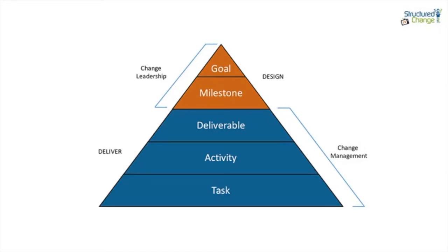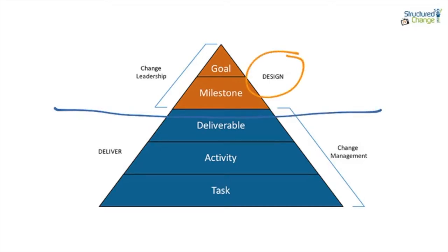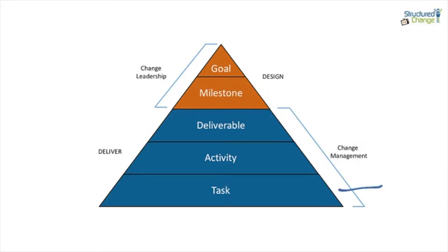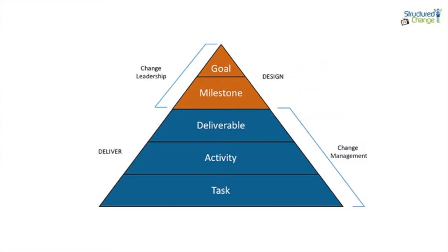A parallel delivery triangle is another part of the Structured Change framework. You'll see the design piece corresponds to leadership, and the execution or delivery piece corresponds to change management. The idea is that whether it's a task done by an individual, an activity undertaken by two or more people, a tangible deliverable, a milestone associated with an outcome and value, or ultimately the goal — we've realized what was set out by the organizational strategy.